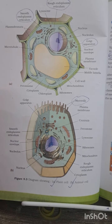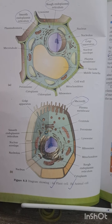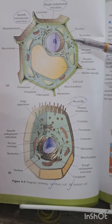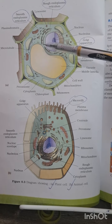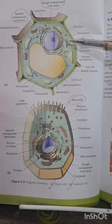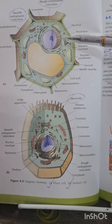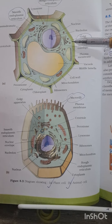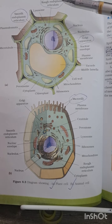In the examination they might give you an image and ask you to identify the correct organelle. A trick is: you can see the nuclear membrane in the image, and the Golgi apparatus is positioned opposite to the nuclear membrane. Initially it forms along with the nuclear membrane, and ribosomes will also be present.